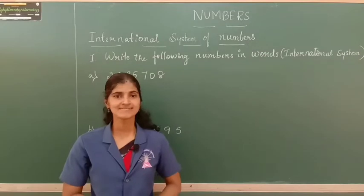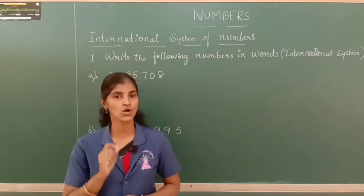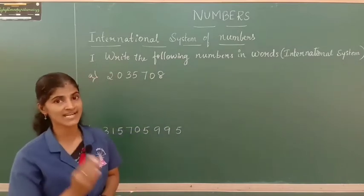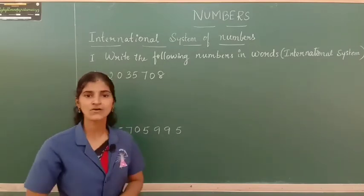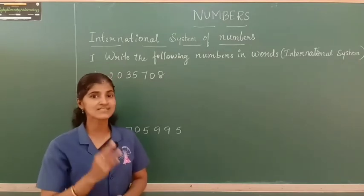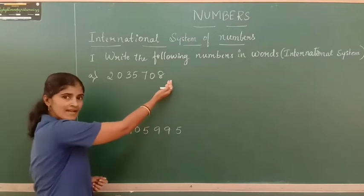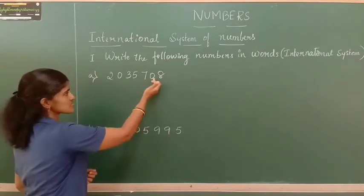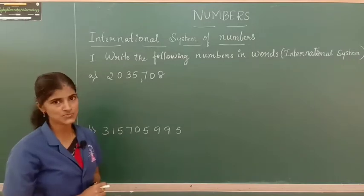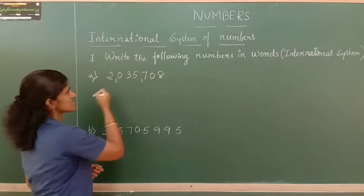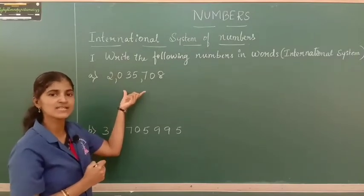Now let us write the number name in the international system. For that we have to follow the rule for the comma. In the Indian system we started with a group of three digits from the right, then groups of two digits. But in the international system we make groups of three digits starting from the right throughout. After every third digit we put a comma.